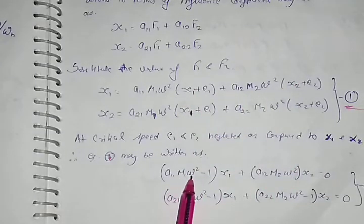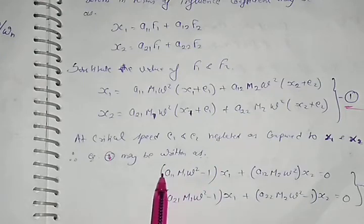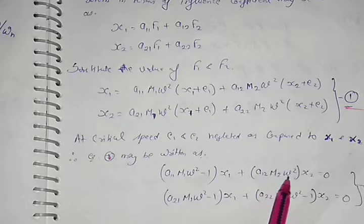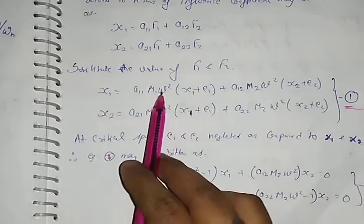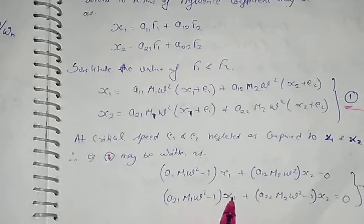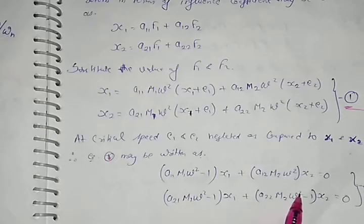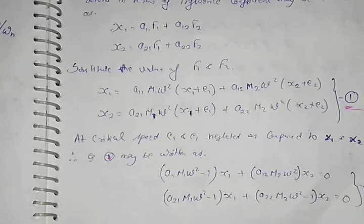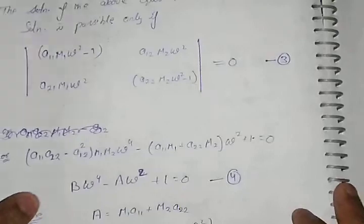A11*M1*omega^2 - 1 into X1 plus A12*M2*omega^2*X2 into X2 is equal to 0. And same A21*M1*omega^2 - 1*X1 plus A22*M2*omega^2 - 1 into X2 is equal to 0. This is equation number 2, both are equation number 2.